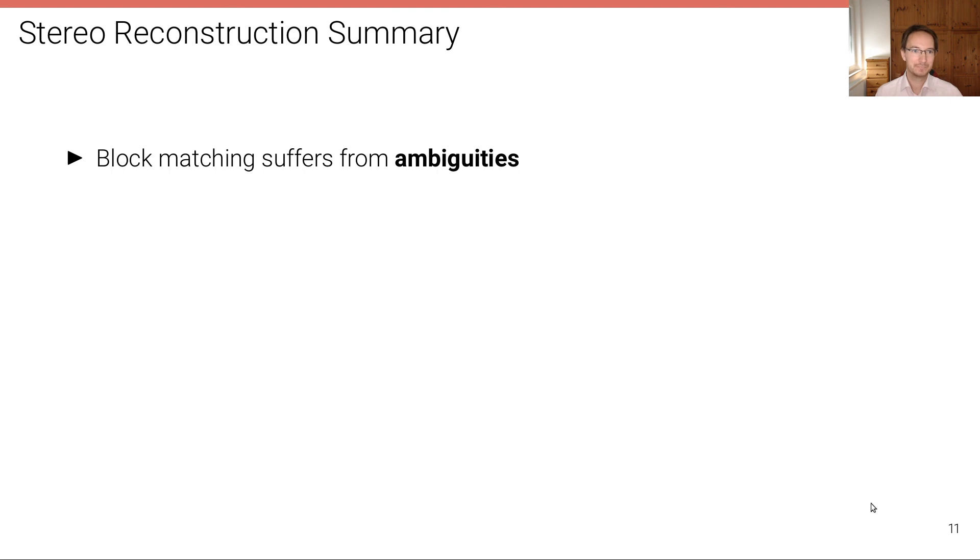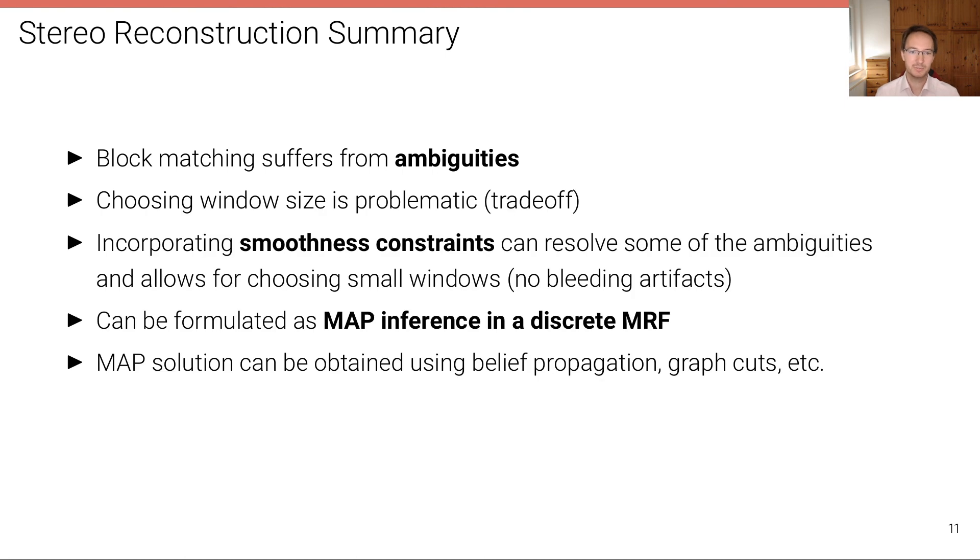Okay, in summary, block matching easily suffers from these matching ambiguities that we've talked about before. And choosing the window size is really problematic due to this tradeoff that we've discussed in lecture number four. And what we can do is we can integrate smoothness constraints that resolve some of these ambiguities and allow for choosing smaller windows. By integrating the smoothness constraints using these graphical models, we can then choose smaller windows and instead increase the smoothness parameter, which reduces the bleeding artifacts.